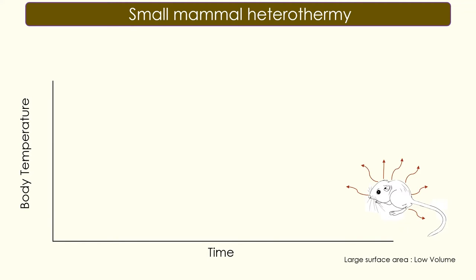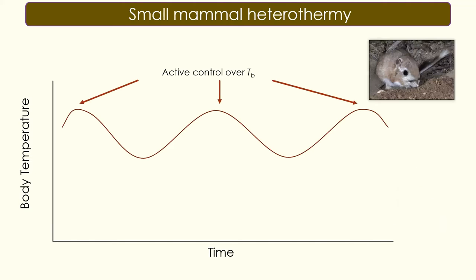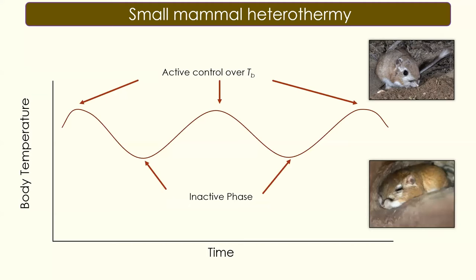Many small mammals have developed a strategy called heterothermia, in which their body temperature profiles vary. During their active periods, when they're out foraging, they have active control over their body temperature, expending their own resources to fuel daily activities such as foraging, mating, and defending territory. However, during inactive periods, they loosen control over their body temperature to the environment, which helps them save energy. These inactive phases are akin to induced hypothermia during the night.